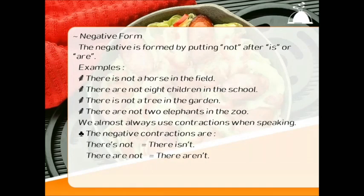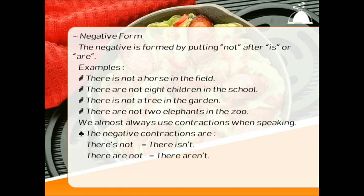Negative form: the negative is formed by placing 'not' after 'is' or 'are'. Examples: there is not a horse in the field. There are not eight children in the school. There is not a tree in the garden. There are not two elephants in the zoo. We almost always use contractions when speaking. The negative contractions are: 'there is not' becomes 'there isn't', and 'there are not' becomes 'there aren't'.